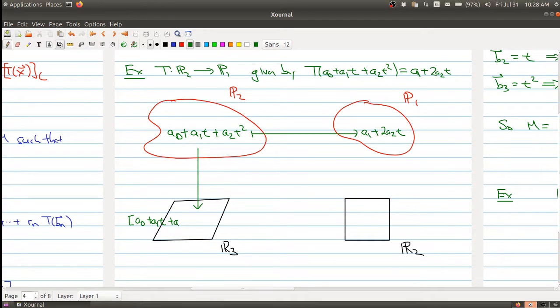Because we're using the standard basis of P2, this just gets sent to the tuple in R³ where the coordinates correspond to the coefficients. So that's what's happening over here. And then the same thing happens over here.